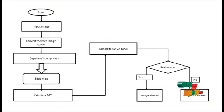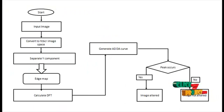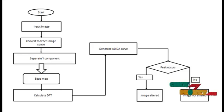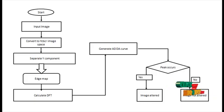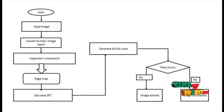Let's discuss the flow of the project: digital image forgery detection and estimation by exploring basic image manipulation. In the initial step, we start the process by giving an input image. The input may be a forged or non-forged image. The given image is then converted into YCBCR color space, which converts the image into a yellow-colored gradient representation, and is basically used for the detection process.